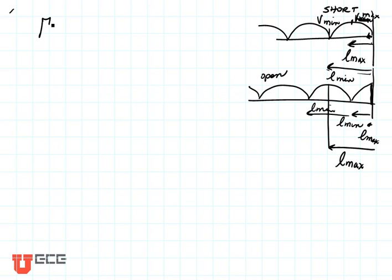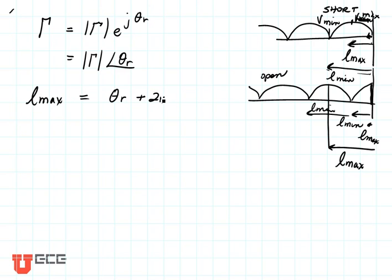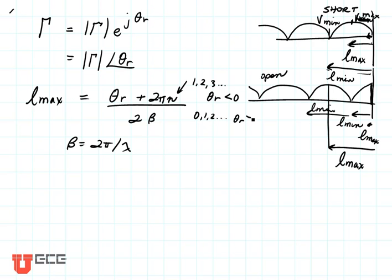In order to do this, we need to know the reflection coefficient. That's a complex value with a magnitude and phase, written as |Γ| e^(jθᵣ) or |Γ|∠θᵣ. In that case, Lmax, the distance from the load to the first voltage maximum, is (θᵣ + 2πn)/(2β). Beta is 2π/λ. The value n is any integer: 1, 2, 3, etc., if θᵣ ≥ 0. So what this means, just like we see here, the location of Vmax...